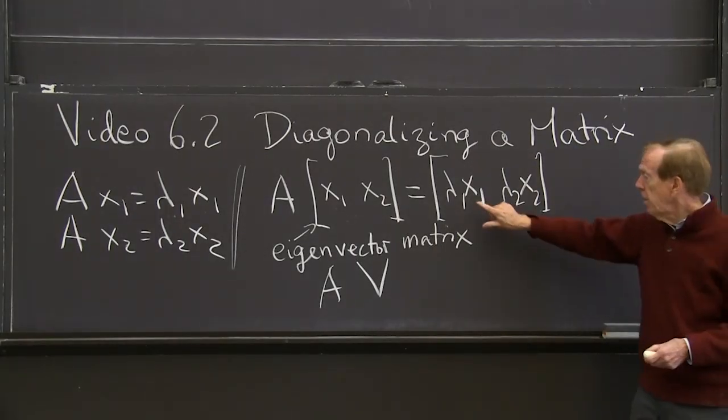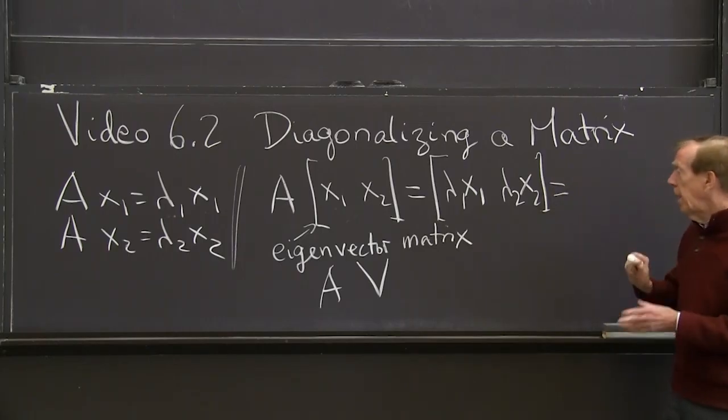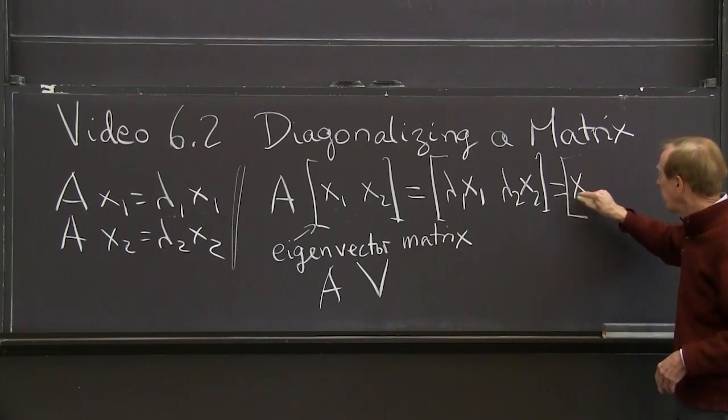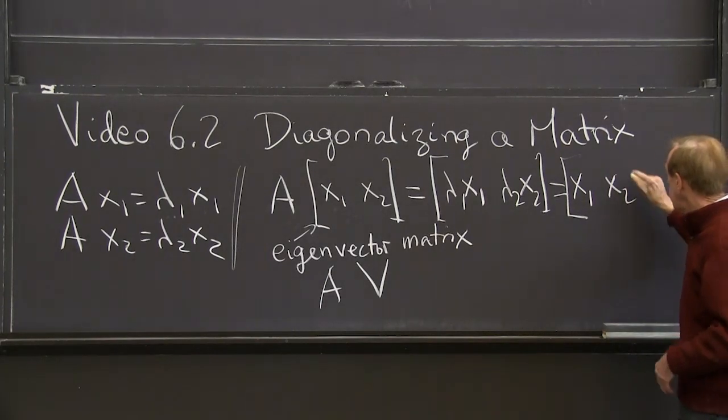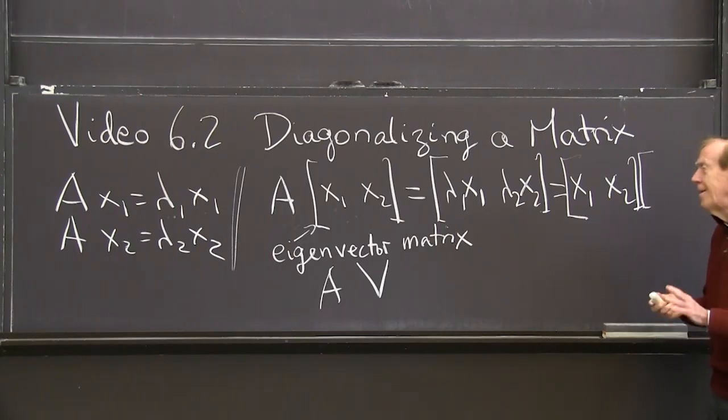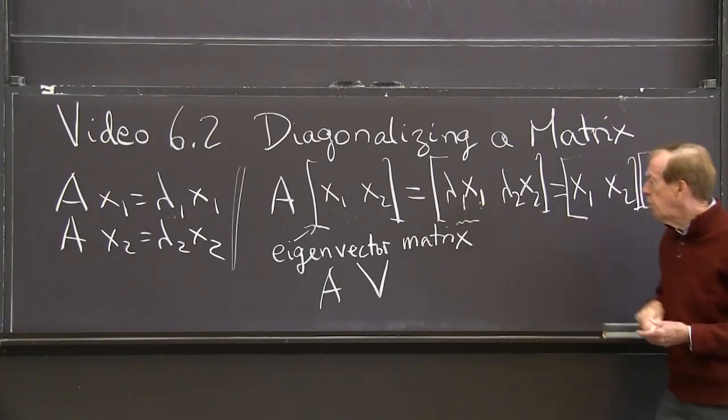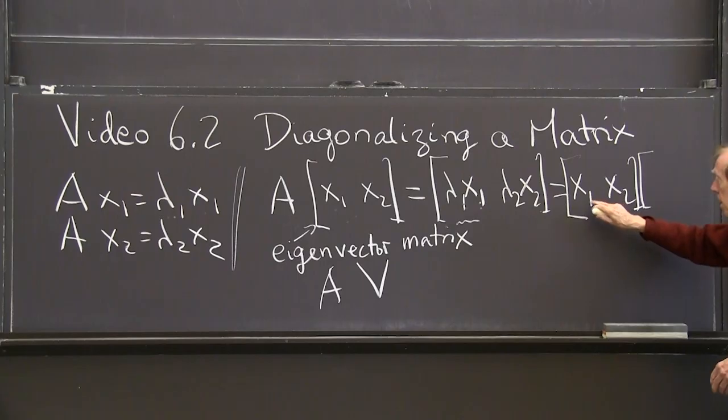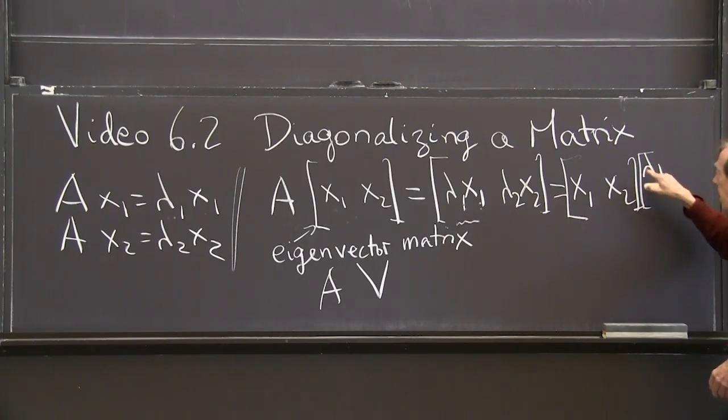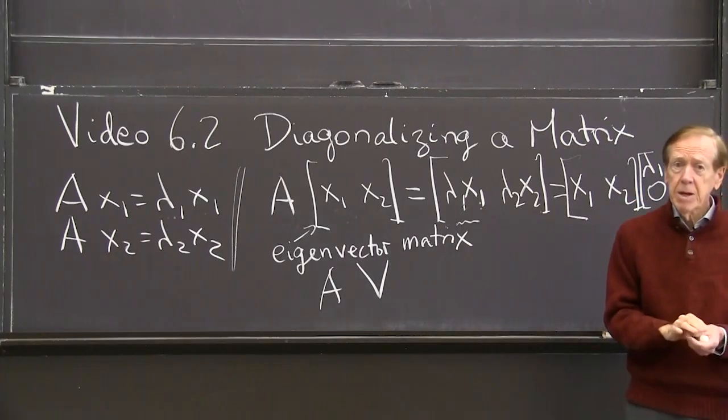But I can look at this a little differently. I can say, wait a minute, that is my eigenvector matrix, x1 and x2, those two columns, times a matrix. Ha ha. Yes. I want to, I'm just taking this first column, lambda 1 x1, is lambda 1 times x1 plus 0 times x2. Right there I did a matrix multiplication.